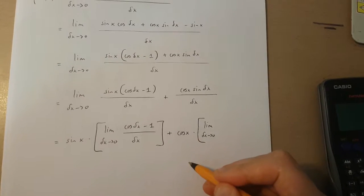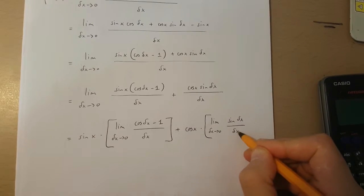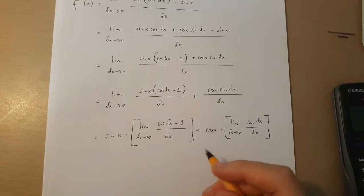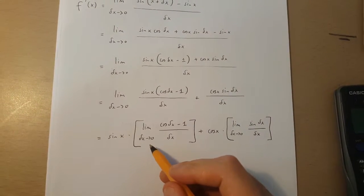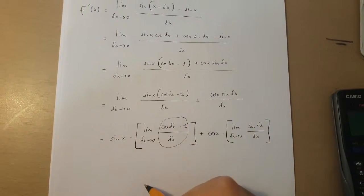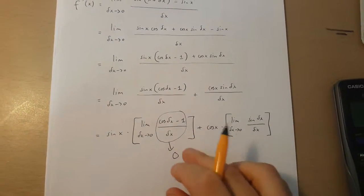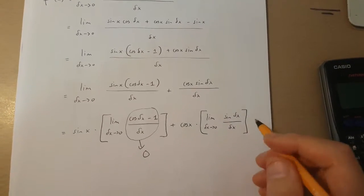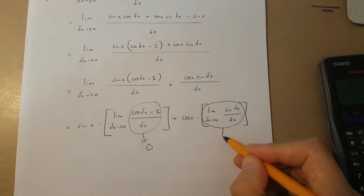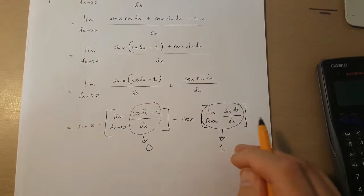plus cos x times, in the limit, as change in x approaches 0, sin change in x over change in x. Now, as change in x approaches 0, the first limit becomes 0 — you can check this out on your calculator. And as change in x approaches 0, the second limit becomes 1 — you can also check this out on your calculator.